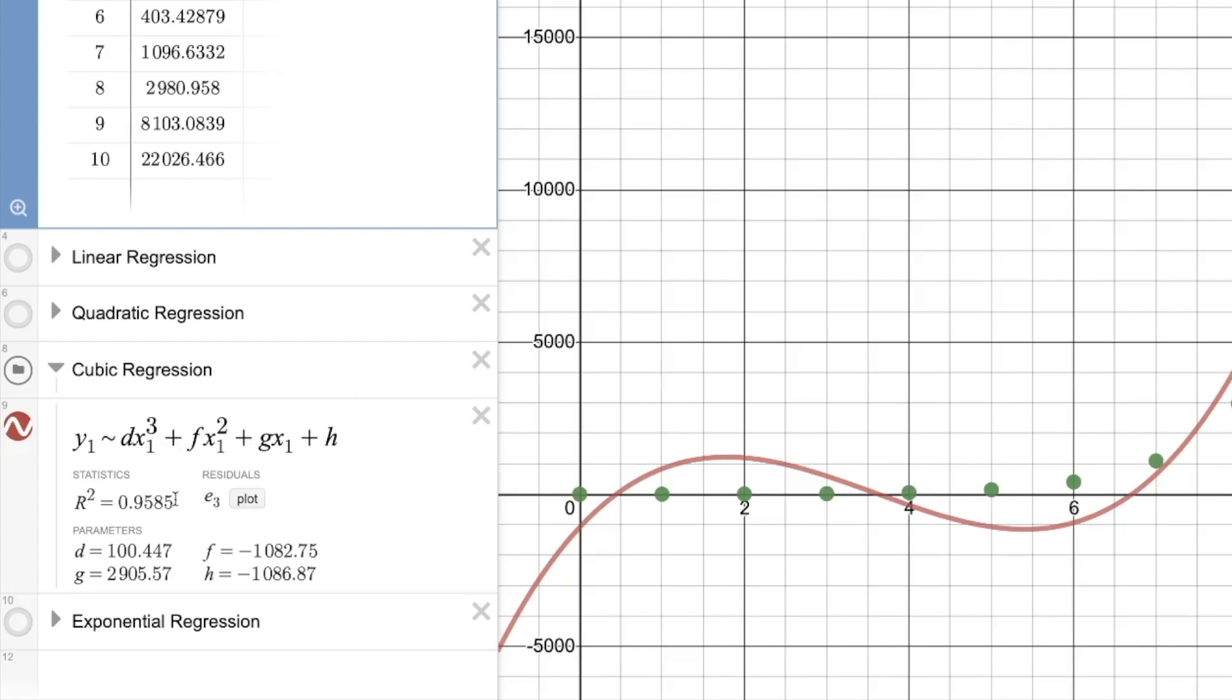Also you should not use the letter e, lowercase e, as a parameter because that is Euler's number, 2.718. So that would be a bad choice. It would automatically think you were trying to use that number if you use lowercase e. Notice our R squared value is now 0.9585. We're starting to get to a better fit, but still not perfect.